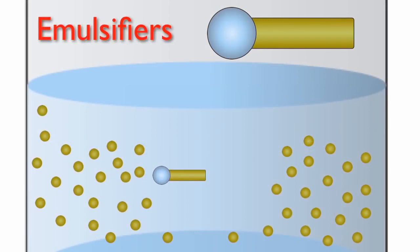If we added lecithin to our original oil and water emulsion, its hydrophilic head will prefer to associate with water and the hydrophobic tail with the oil droplets.